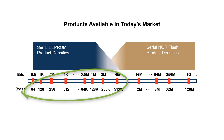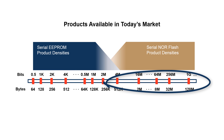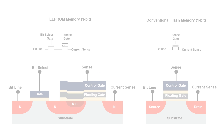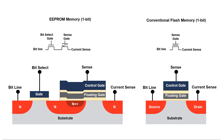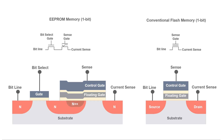NOR flash takes less area per cell to make, so it has displaced double EEPROMs completely at the higher density end of the scale. This is what an EEPROM memory cell looks like on paper — here is the gate symbol and a cross-section drawing. Over here is a flash memory bit.